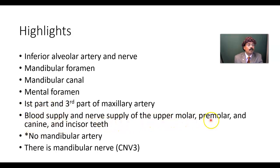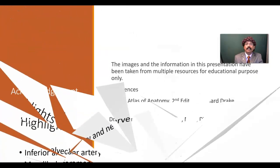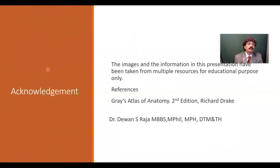The blood supply and nerve supply of the upper molar, premolar, canine, and incisor teeth: the upper molar and premolar teeth receive blood supply from the posterior superior alveolar artery, and nerve supply from the posterior superior, middle superior, and anterior superior alveolar nerves. The canine and incisor teeth receive blood supply from the infraorbital artery, and nerve supply from the infraorbital nerve. Remember, there is no mandibular artery, but we do have the mandibular nerve. That covers the blood supply and nerve supply of the teeth for the upper jaw and lower jaw.